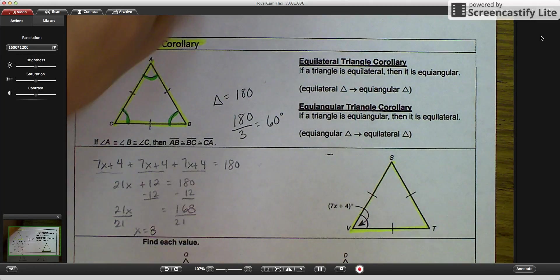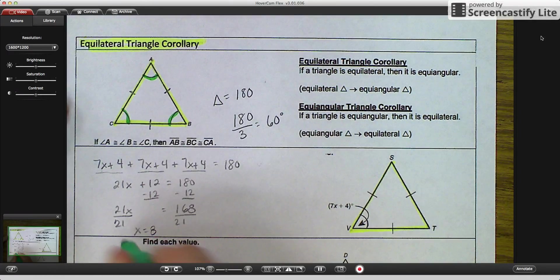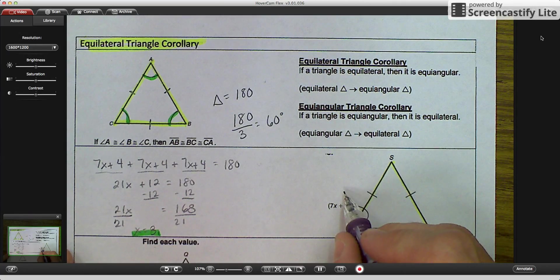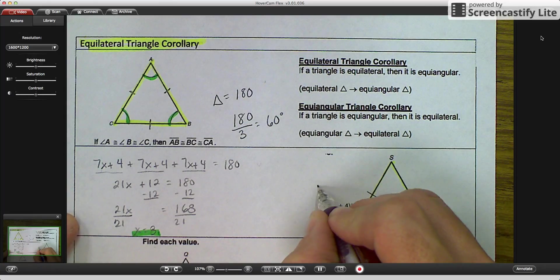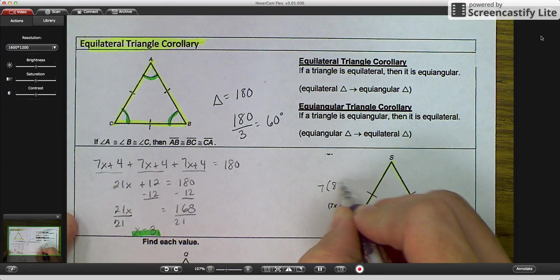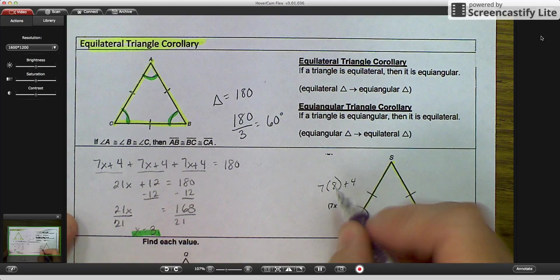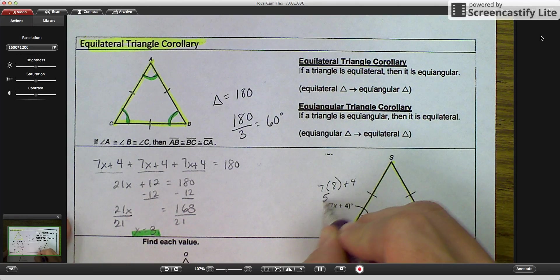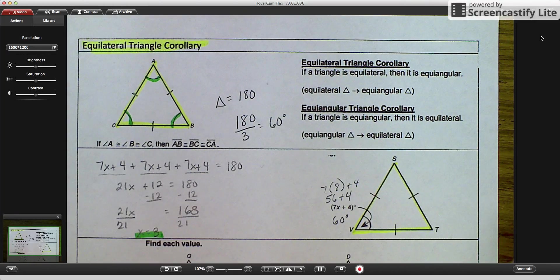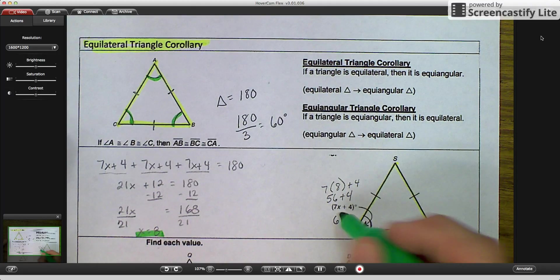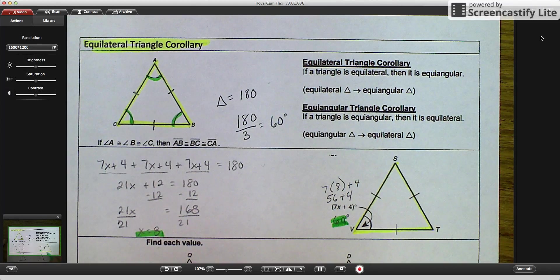So then when you know that x equals 8, then you take your x equals 8, and you plug it in over here. And it's 7 times 8 plus 4, which is 56 plus 4, which again, we talked about, that is 60 degrees. That would be one way that you would be able to solve that one.